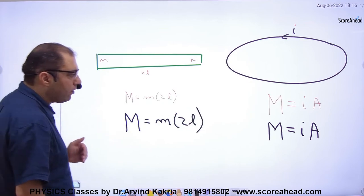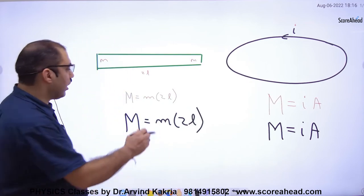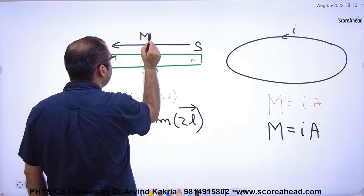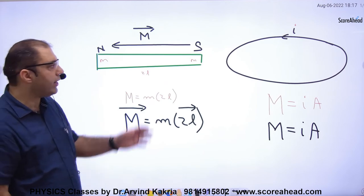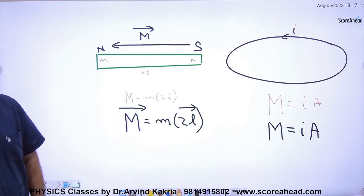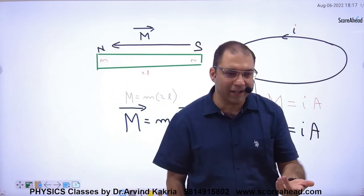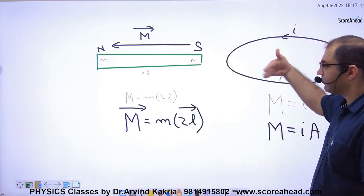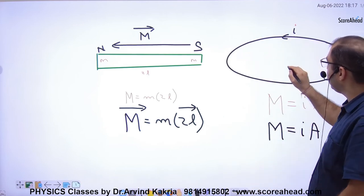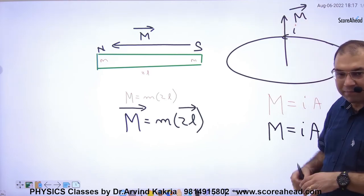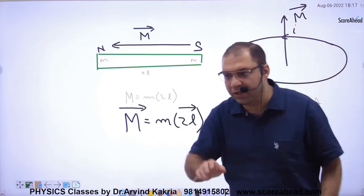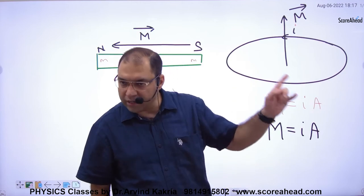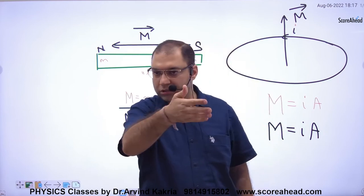Capital M is a vector, so we need its direction. For a bar magnet, capital M points from south to north. For a current-carrying loop, since the poles are not visible, we use the right-hand rule: curl the four fingers along the direction of current in the loop, and the thumb gives the direction of capital M. This direction is the same as the direction of B at the center of the loop.